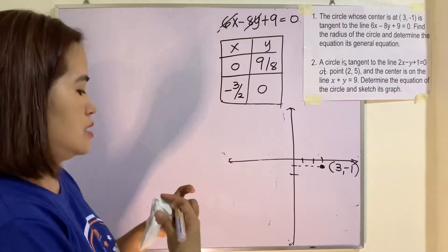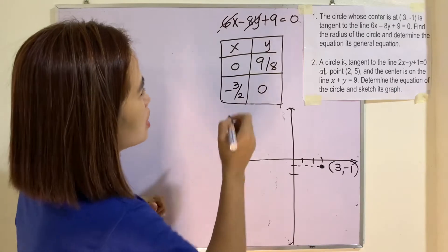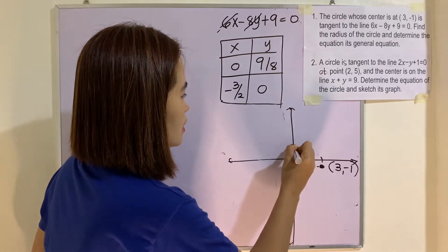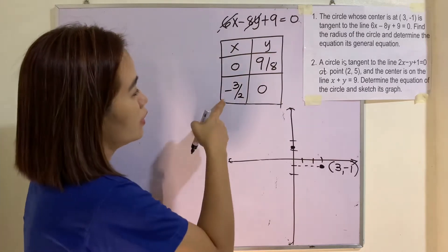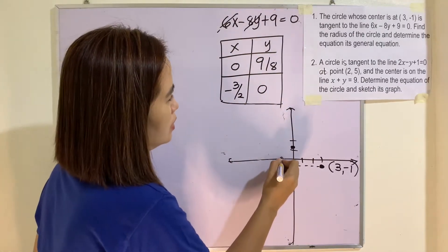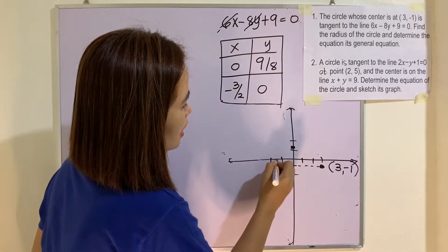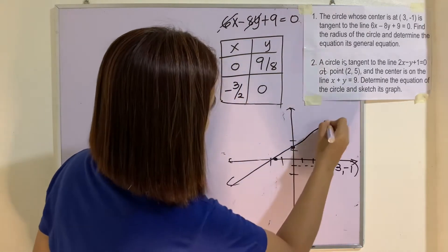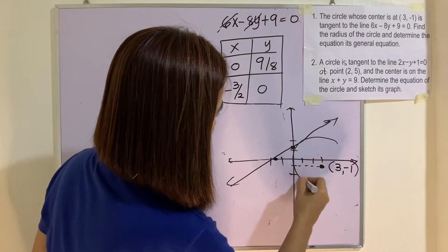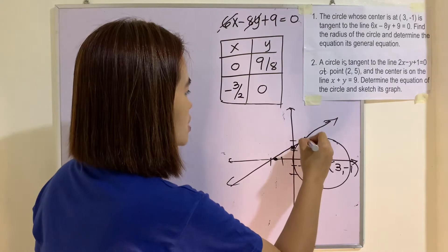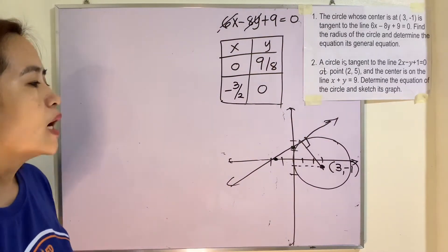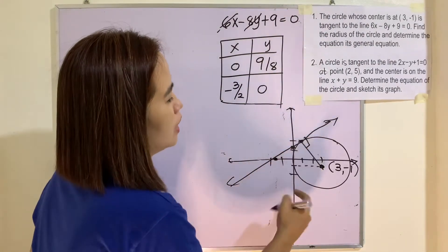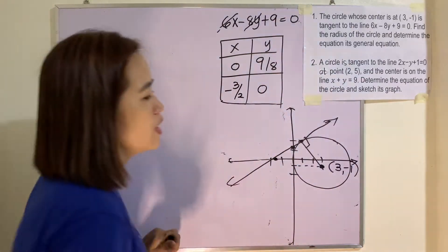We can now graph the line using the points (0, 9/8) and (-3/2, 0). This is your line and this is your circle. A tangent line touches the circle at only one point, and this line is always perpendicular to the radius drawn to the center.